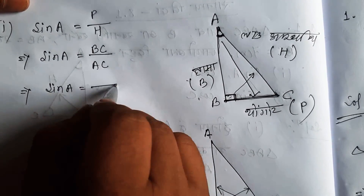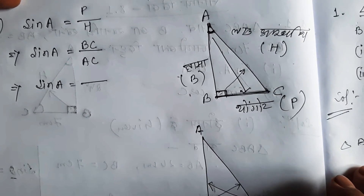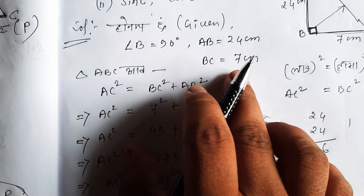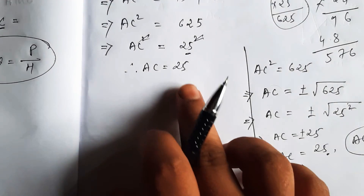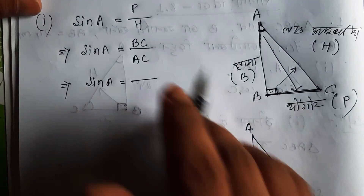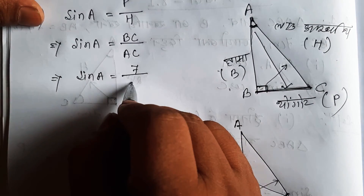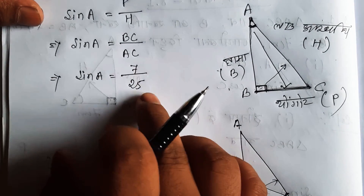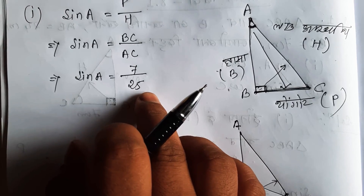Now we can apply this to the triangle. BC is on the table — BC is 7, and AC is 25. If sin is applied, BC over AC is 7 over 25.